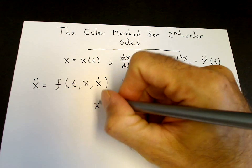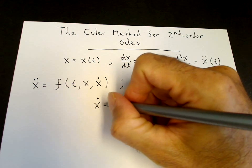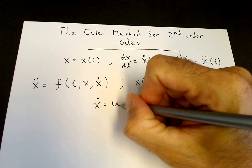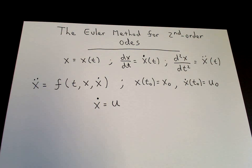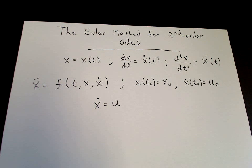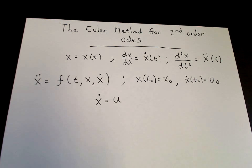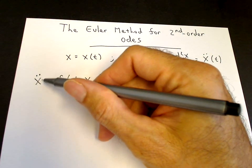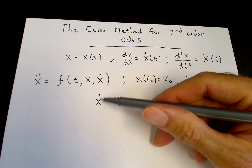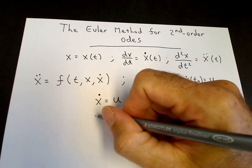We write the first equation x dot as the definition of a new variable which we call u. So in physics typically x is the position vector or position point in position space and u is the velocity.